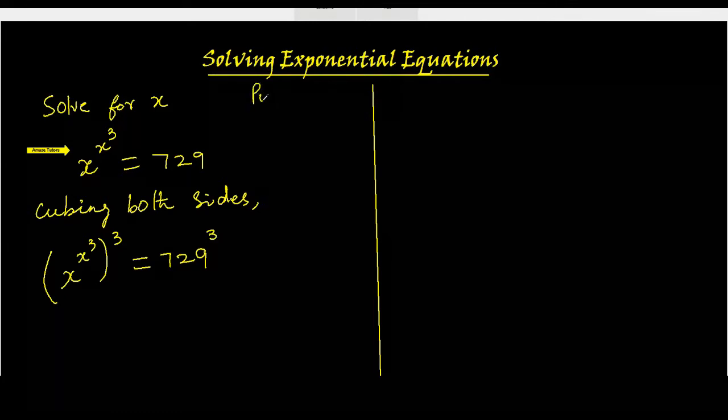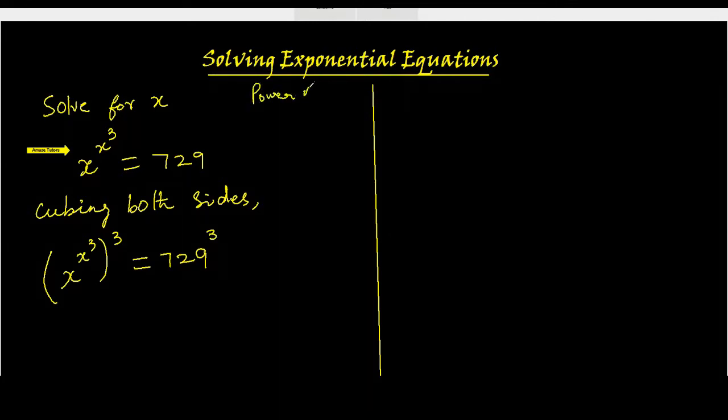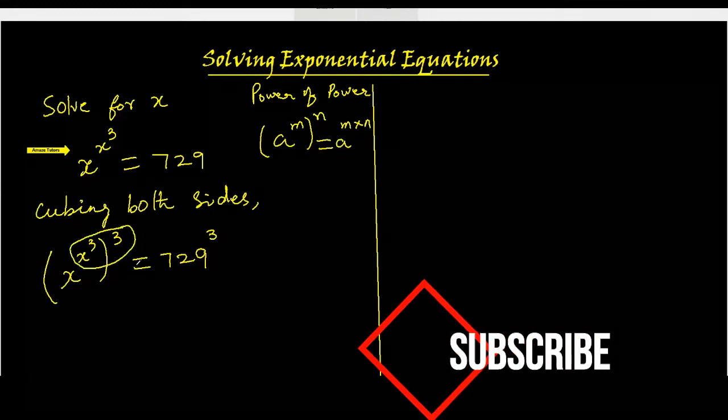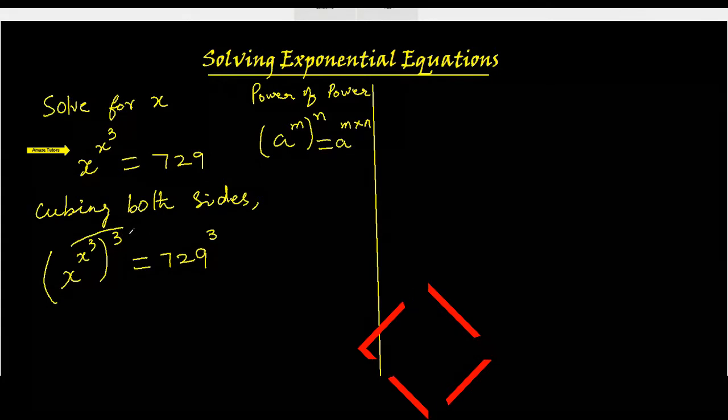Now we know the power of power rule. When there is more than one power, like a power m raised to another power n, we will multiply the exponents. That is what we are having here with the two powers x cubed and 3.